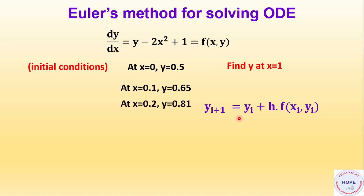Proceeding in a similar manner, we can calculate y at x = 0.2, and continuing this process, we get the value of y as 2.19 at x = 1. Let's write the program now.